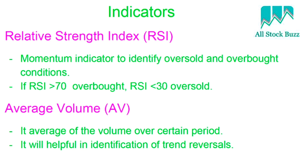Relative Strength Index (RSI) is a momentum indicator used to identify oversold or overbought conditions. For example, if a stock is trending upward but you don't know whether it's going to come down, you might buy it and suddenly it falls — and you incur a loss. To avoid these conditions, you can use RSI. If RSI is greater than 70, it is called an overbought condition. If RSI is less than 30, it is called an oversold condition.